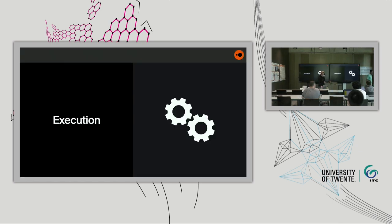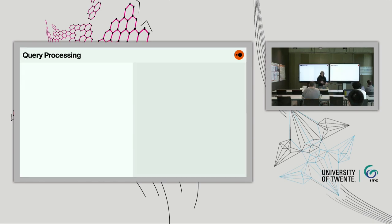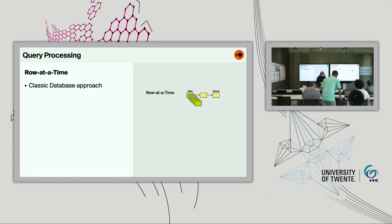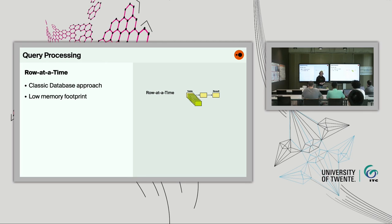Let's jump into execution. Any query engine or database today works in one of three ways. The first is the row-at-a-time model — the classic database approach. If you have a table of rows and want to calculate an average, you pass through one row at a time through the pipeline. This is nice because it has a very low memory footprint. But these systems were designed when RAM was very scarce, and the downside is very high CPU overhead — the engine wastes a lot of CPU cycles shuffling data around without doing useful transformation.